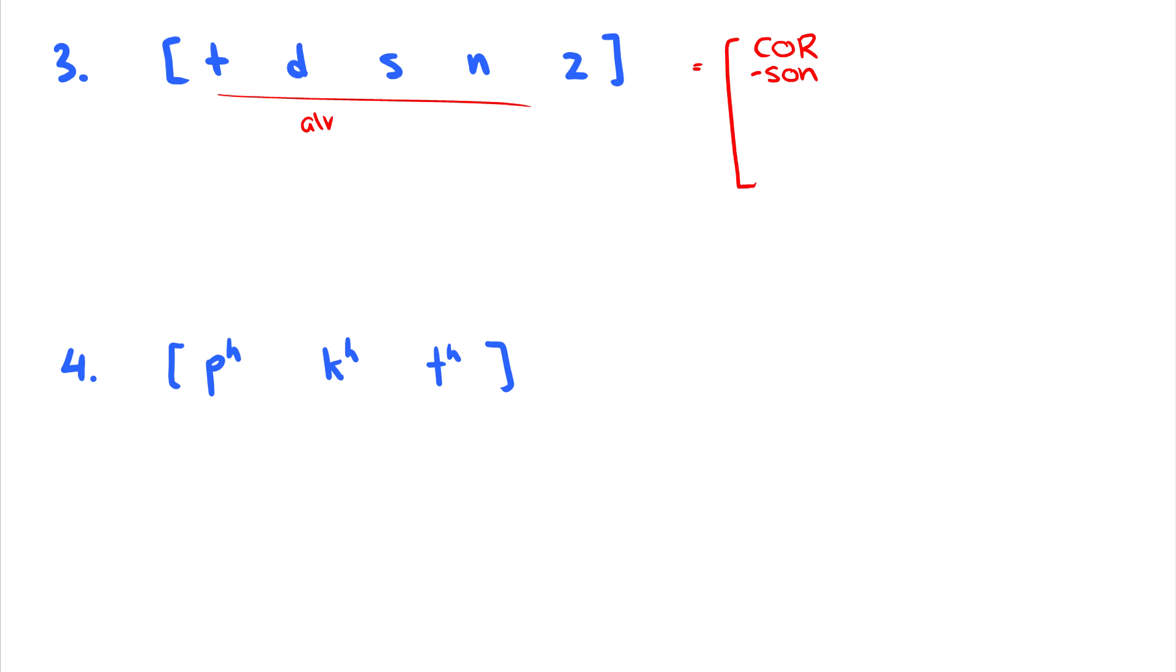But even more so, these are alveolar sounds made with the tip of the tongue. And so we have tip here. So what's the feature that distinguishes between tip and blade? That is distributed. So plus distributed is made with the blade. But minus distributed is made with the tip. So we can classify these groups of sounds as being minus distributed minus sonorant coronals. And of course, we can always say, what about voicing? Does it matter if they're voiced or voiceless? The answer is no, because we have both voiced and voiceless sounds in here.